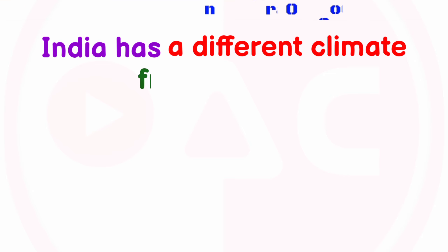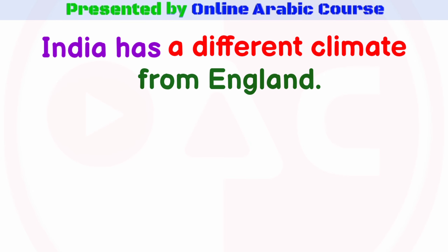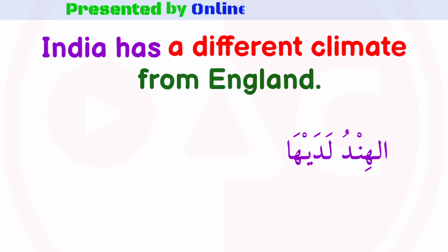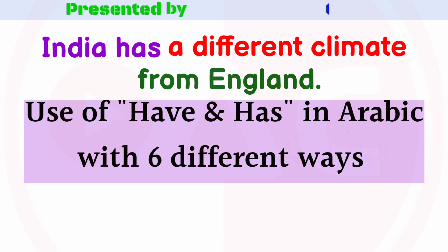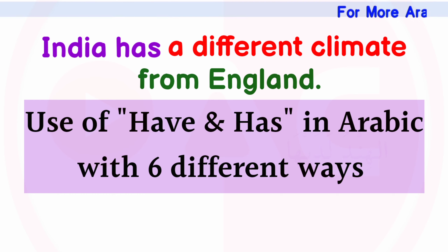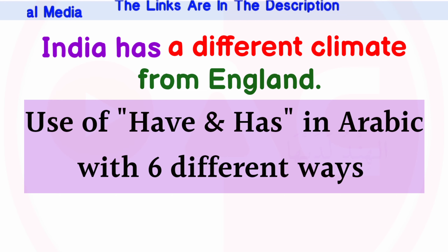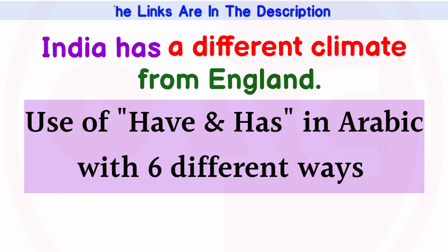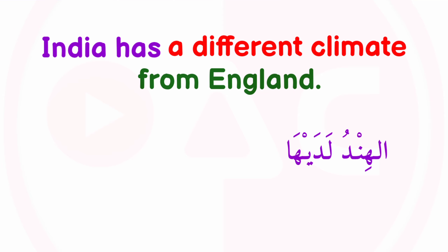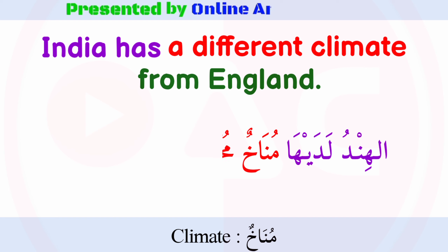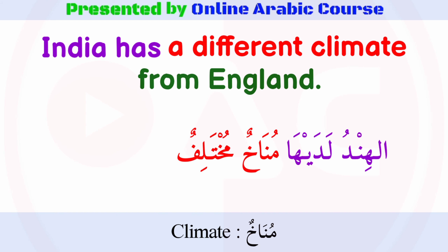India has a different climate from England. India has: Al-Hindu lada'iha. My dear friends, I have created a separate video on how to use 'have' and 'has' in Arabic with 6 different ways — you can watch that video as well. A different climate: Mun a'khun mukhtalif. So: Al-Hindu lada'iha Mun a'khun mukhtalif.